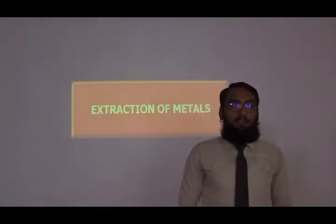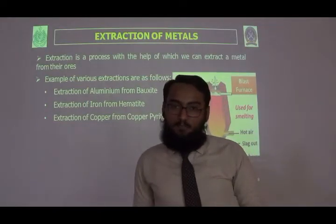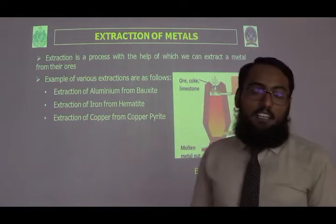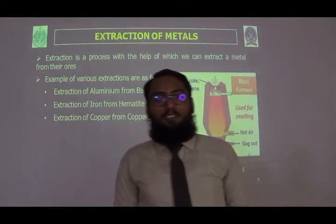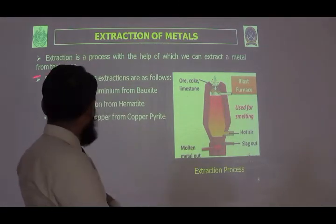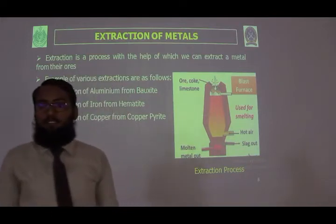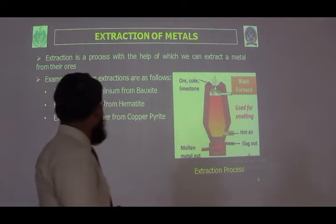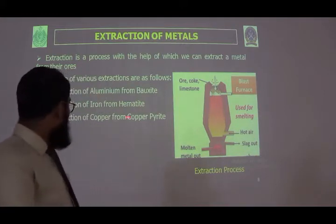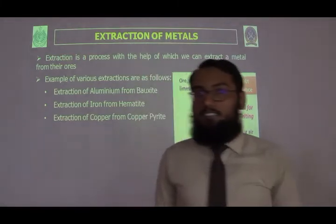Now we will talk about extraction of metals. Extraction is a process with the help of which we can extract a metal from its source. For example, extraction of aluminium from bauxite — bauxite is the ore from which aluminium is extracted. Extraction of iron from hematite — hematite is the ore of iron. Extraction of copper from copper pyrite — copper pyrite is the ore of copper from which copper is extracted in pure form.